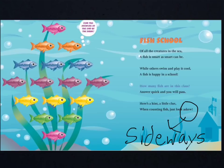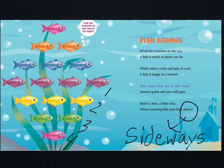So the fish are in an array here. To help us see this array better, let's turn our heads sideways. Then you can see I have 1, 2, 3, 4 equal rows. How many are in each row? What multiplication sentence does this make?